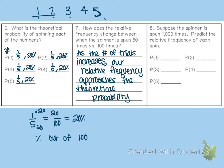Suppose the spinner is spun a thousand times. Predict the relative frequency of each spin. Well, if I'm not actually doing it, that means that this is theoretical, right? So if I am predicting the relative frequency, that means I am doing theoretical predictions here.